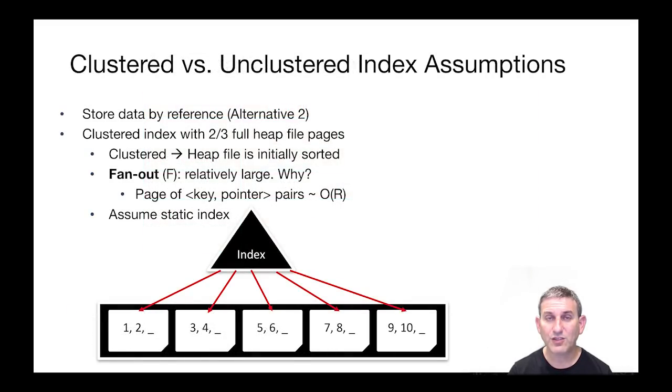Here's a picture of our clustered B+ tree at the bottom. There's an index, which is triangle shaped, and there's a heap file which the index points to. Since it's clustered, all those pointers are laid out in a nice order. Data is stored by reference, alternative two. Because it's a clustered index, we're going to make the assumption that the heap file is two thirds full to account for maybe future insertions.